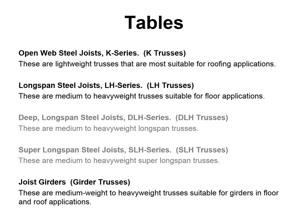LH trusses are medium to heavyweight trusses, typically used in floor applications. The advantage over K trusses is that you'd need a huge number of K trusses to compensate for their lower strength, so I generally use an LH truss in floors. There's also a deep long span steel joist series and a super long span series — the tables go up to about 250 feet, but this industry can make much longer trusses. We're not going to deal with those in this course; they're in the catalog if needed.